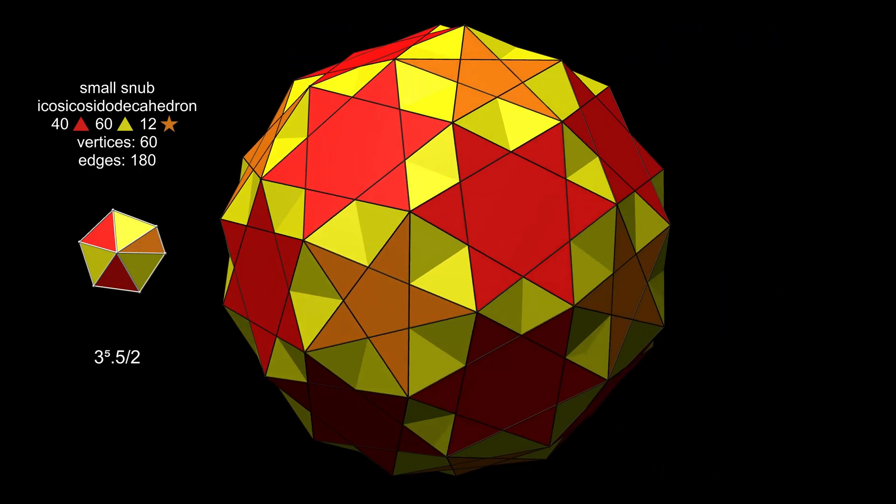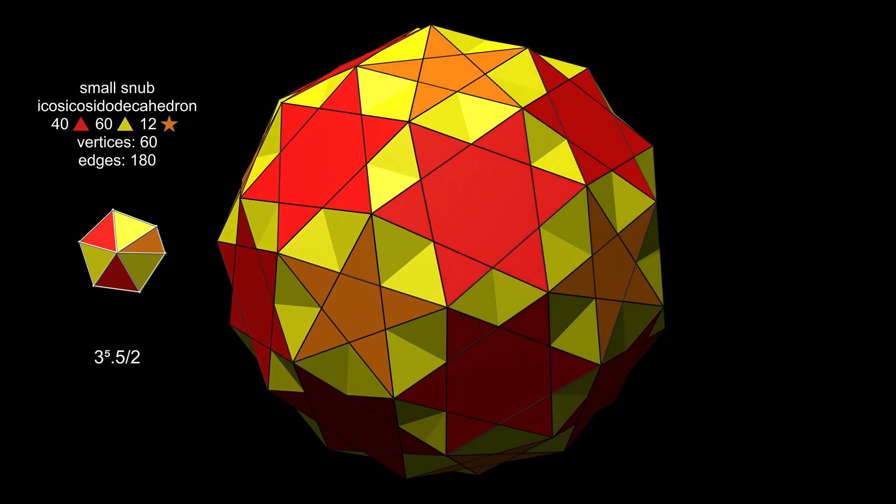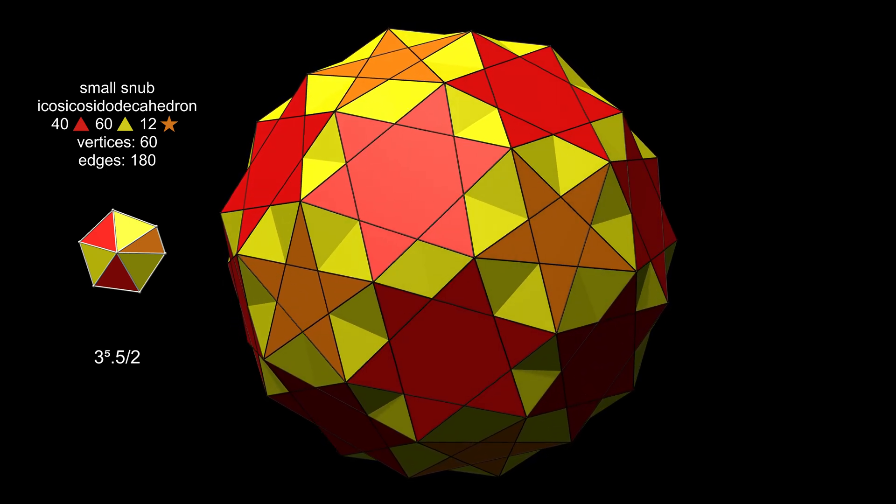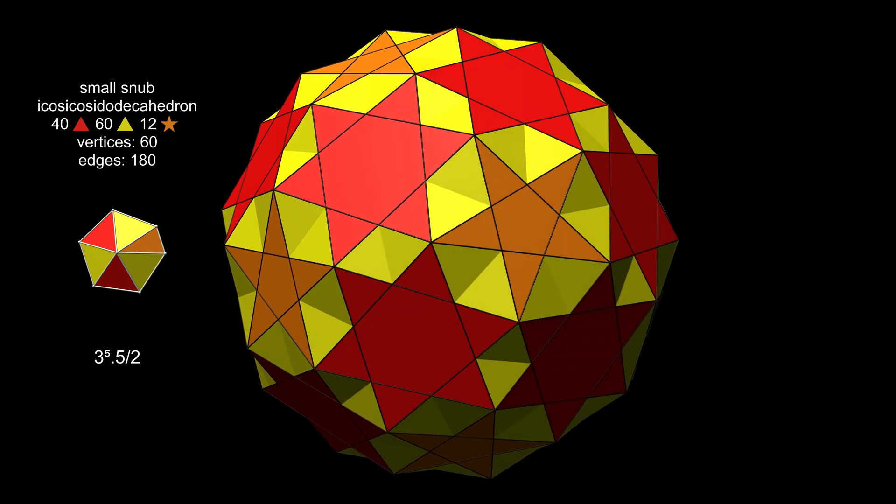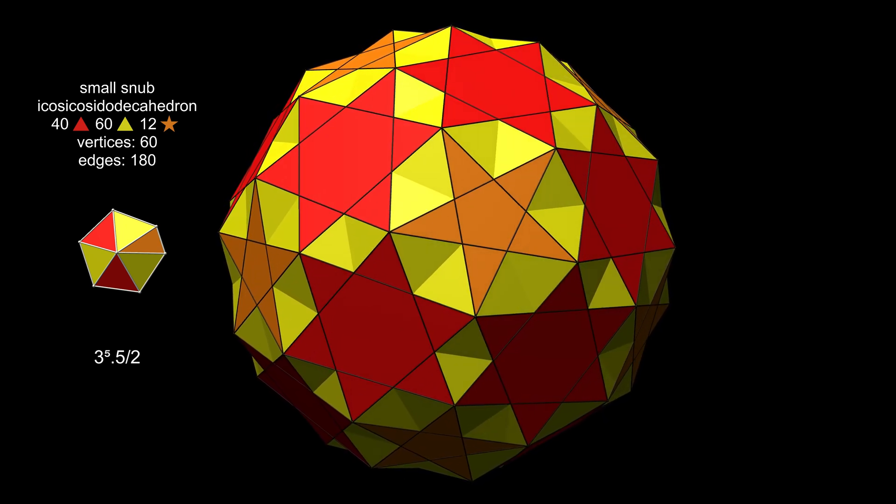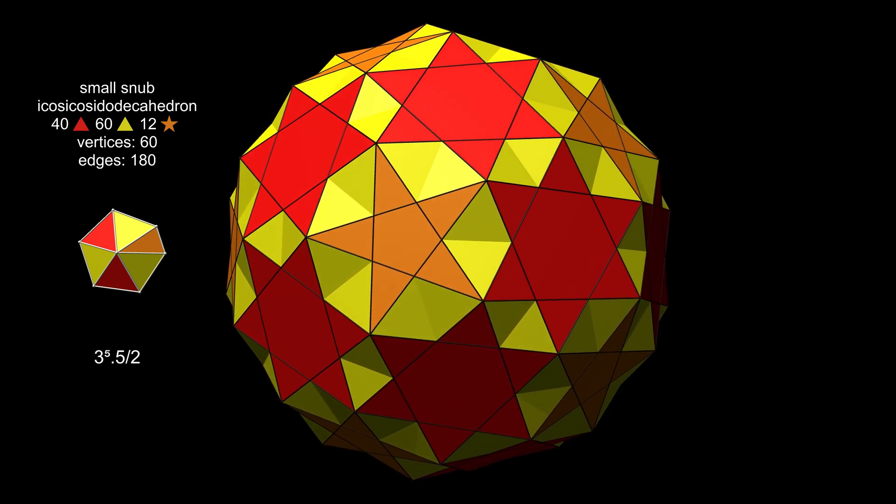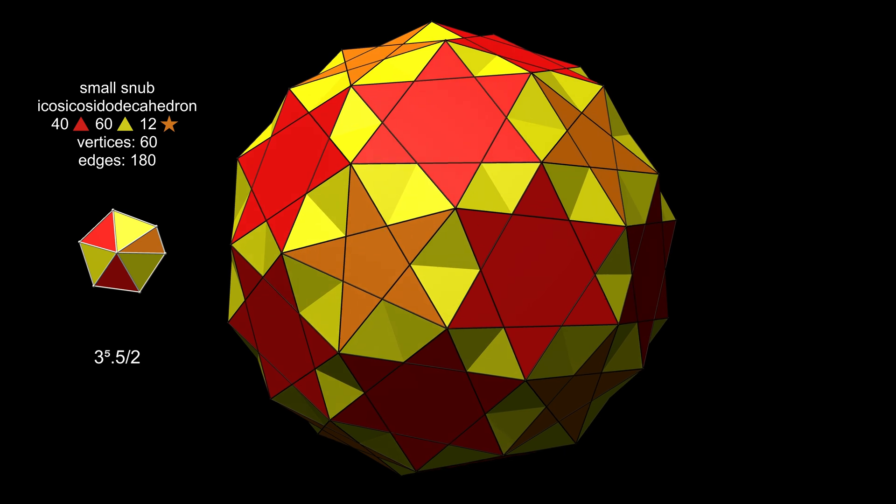The vertex configuration for the small snub icosicosidodecahedron is 5 triangles and a pentagram. This is the same clockwise and anti-clockwise, so this is one of the few snubs that are mirror symmetric, and it doesn't have the twistedness of most snub polyhedra.